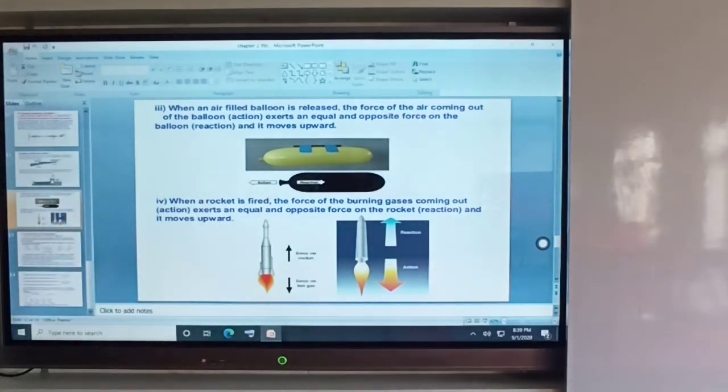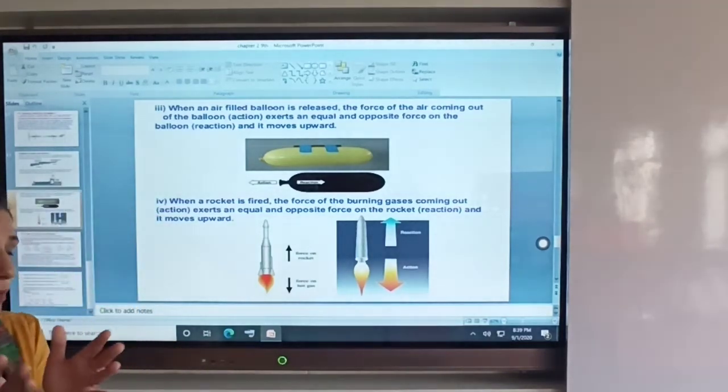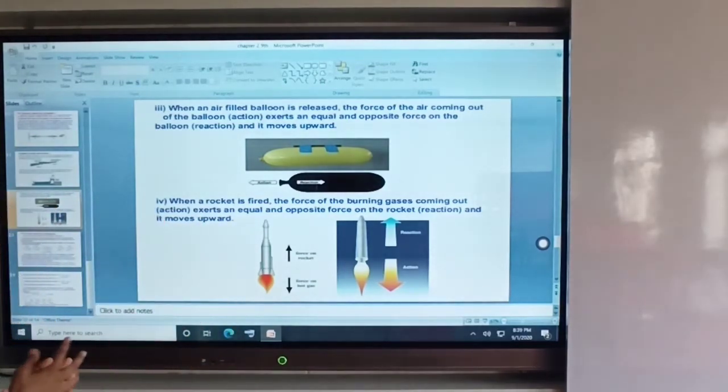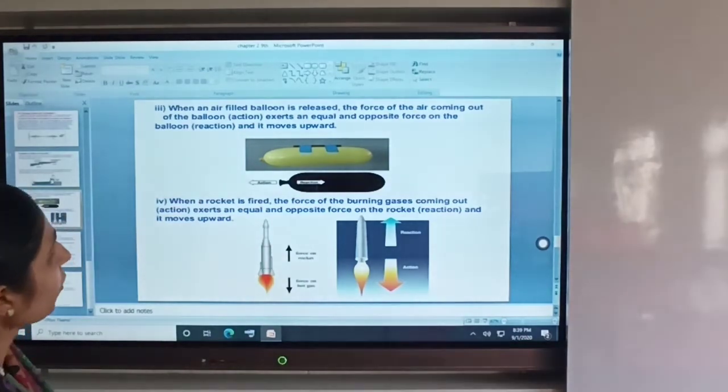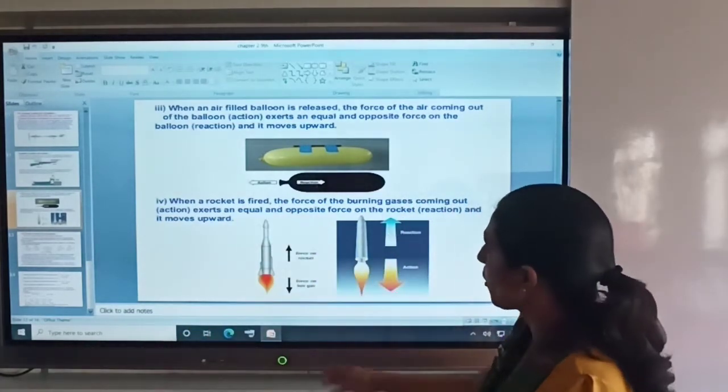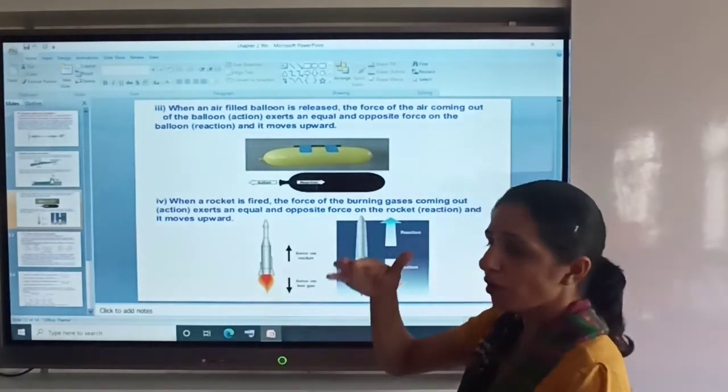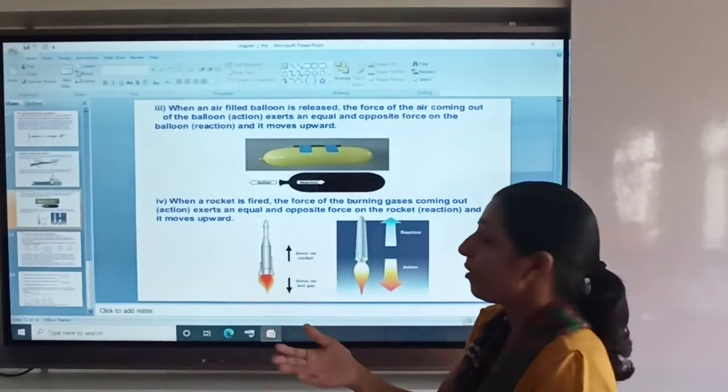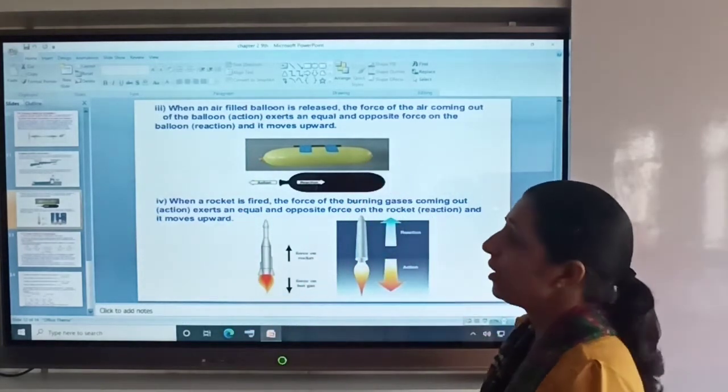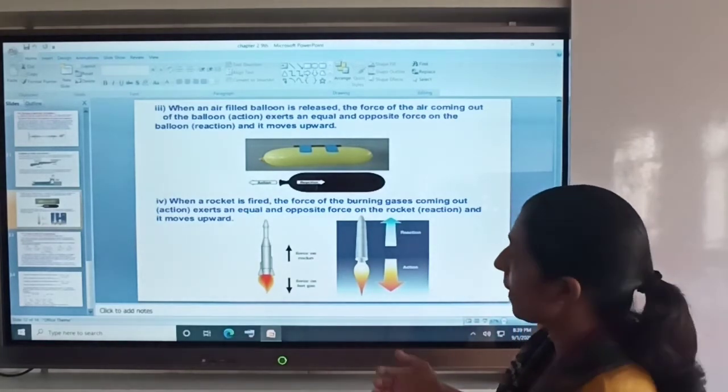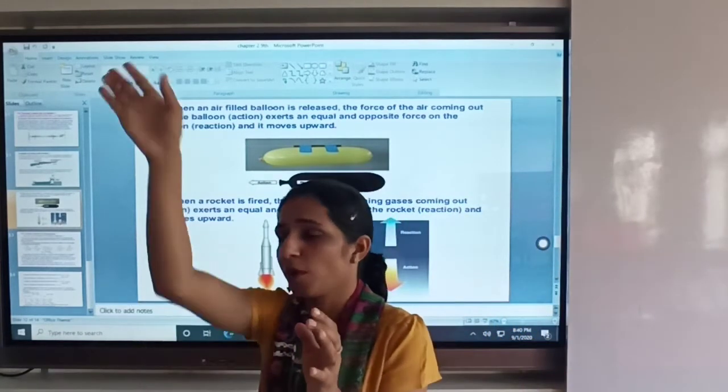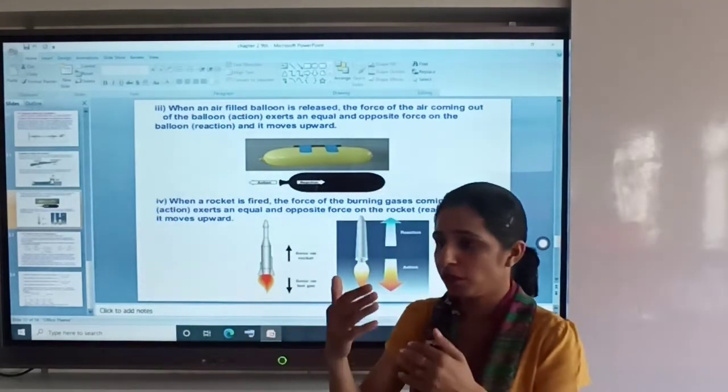In rockets, we expel gases downward from the rocket. The force of the air coming out downward causes the rocket to move upward. Because in rockets, the gas is expelled in the downward direction, and the force pushes the rocket in the opposite upward direction.